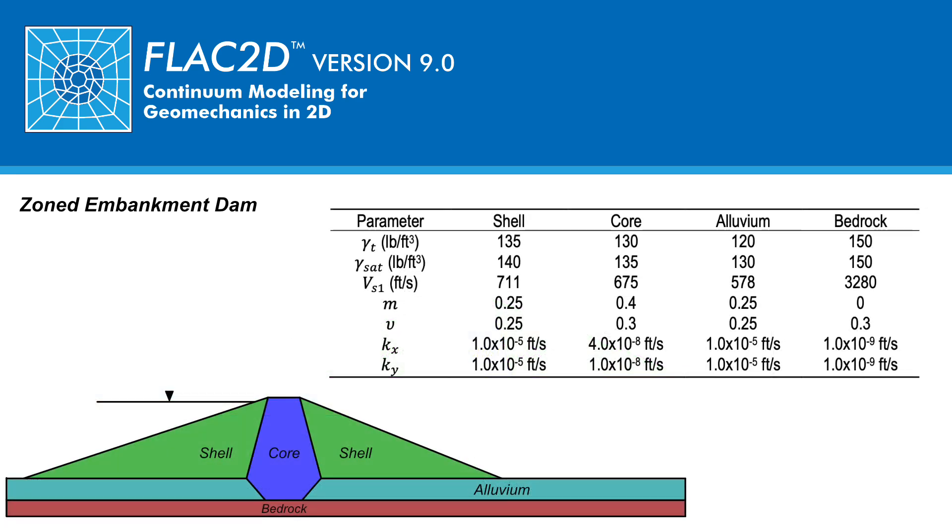General material parameters used in the model are shown for the shell, core, alluvium, and bedrock. Parameters listed include moist unit weight, saturated unit weight, shear wave velocity at a vertical effective stress of one atmosphere, exponential coefficient m that allows the shear wave velocity to vary with effective stress, drained Poisson's ratio, horizontal permeability, and vertical permeability.